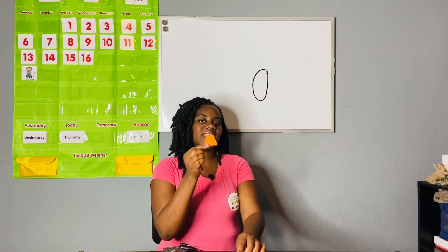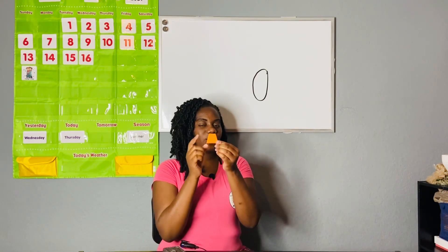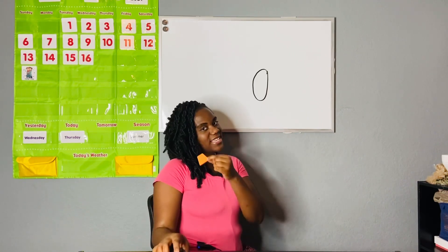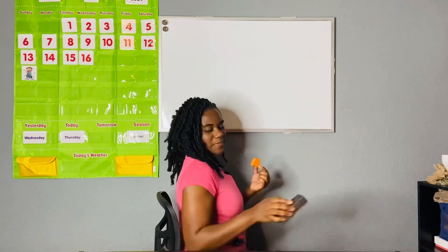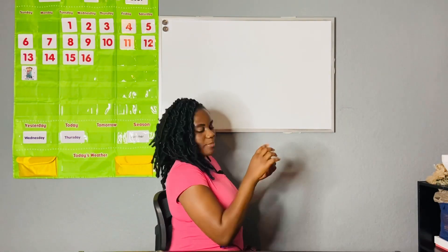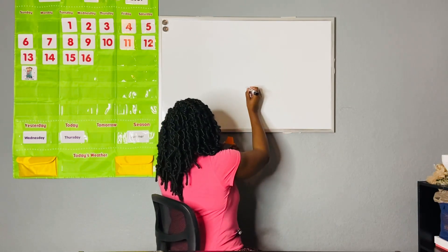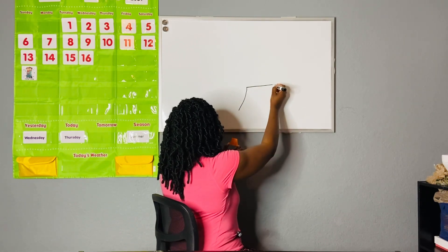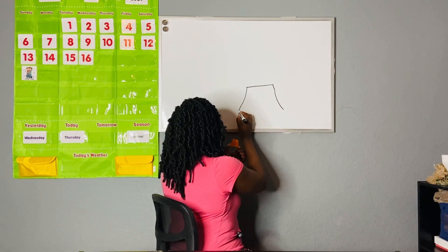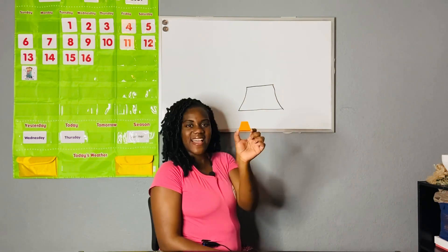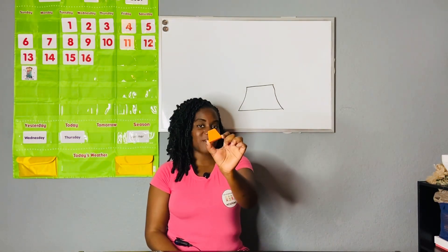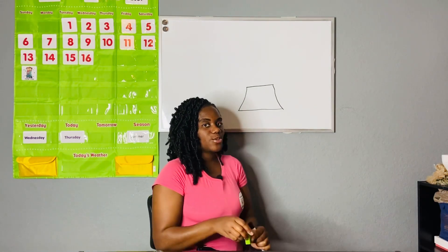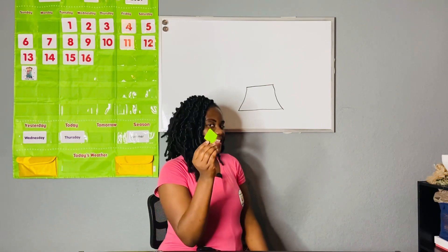Let's see if you remember — what is this shape's name? If you said a trapezoid, you are correct! Let's draw our trapezoid: a line on the top going across, a line going down, another line going down, and then a line on the bottom. That is our trapezoid.